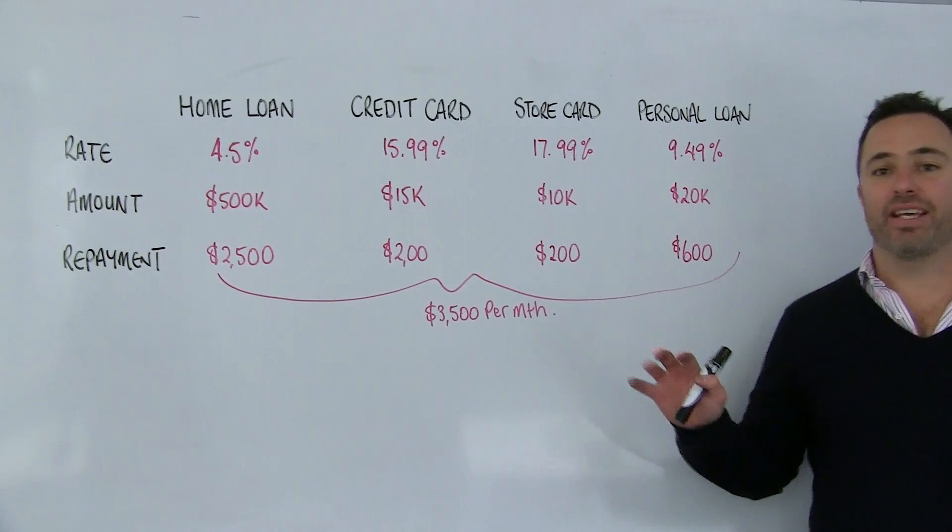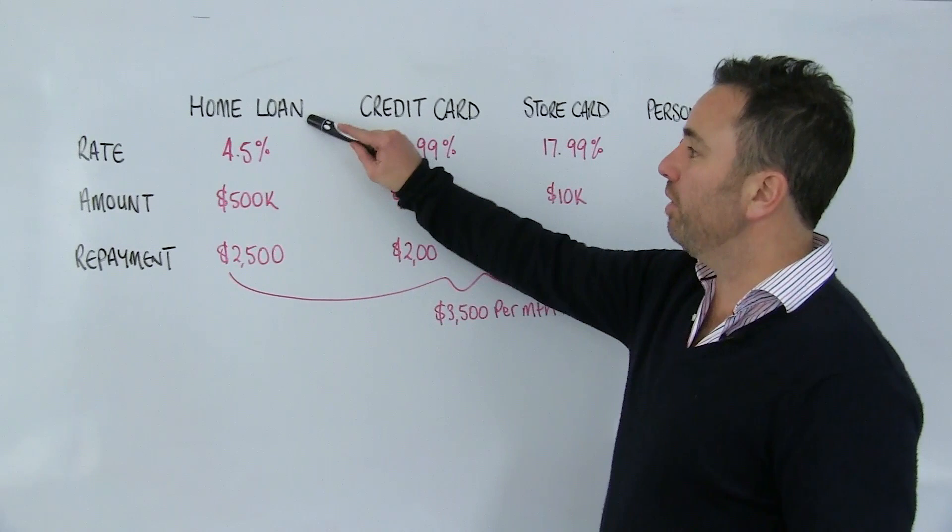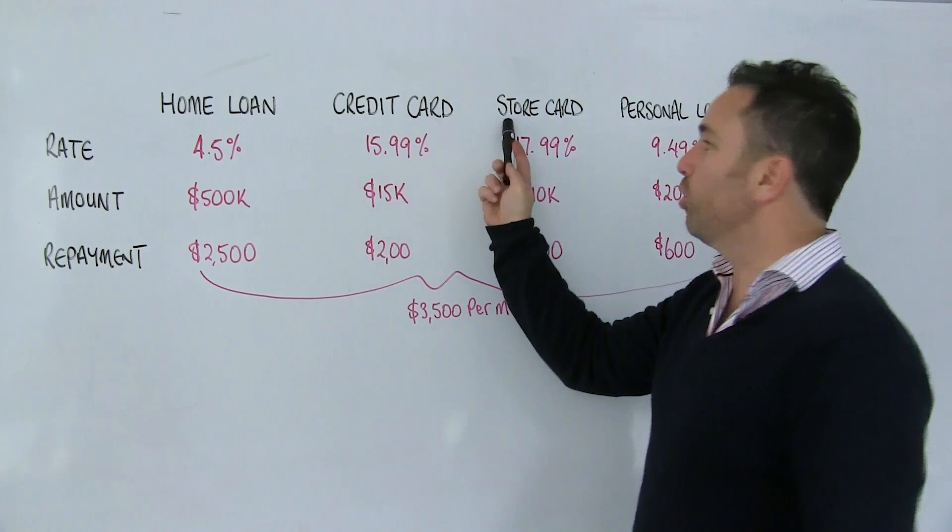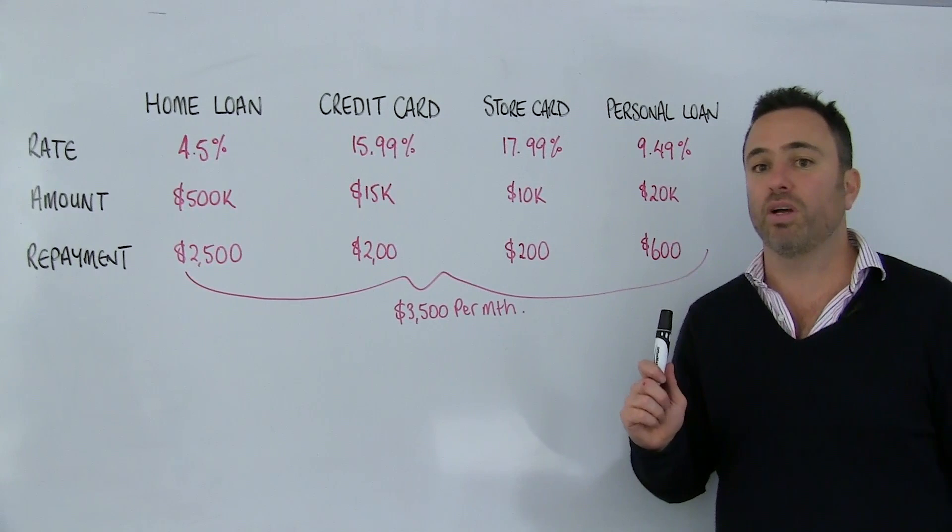This pretty little picture here is all too common. We're going to use the example of a client that's got a home loan at 4.5%, 500 grand outstanding, a credit card, a store card, which is a bit of a sexier version of a credit card, and at the end of the day, a personal loan.